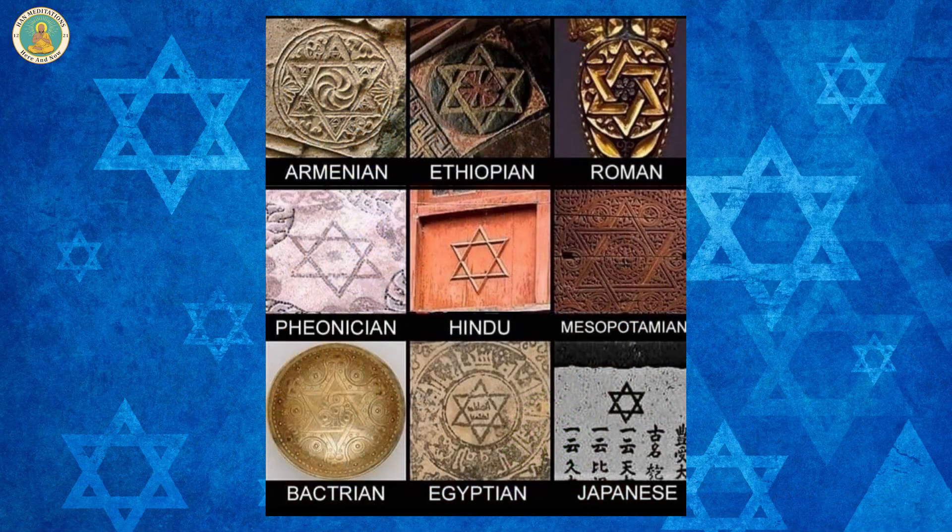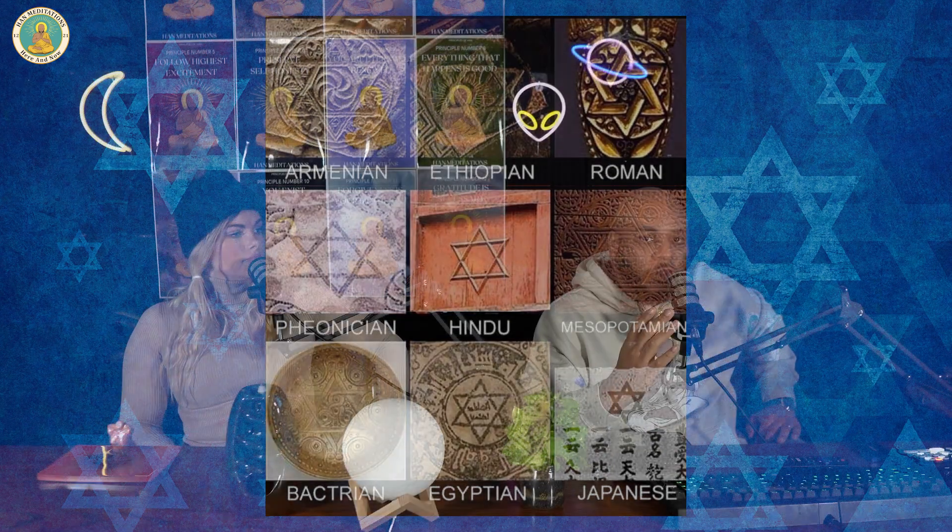The number six is used throughout all different cultures with powerful meanings. In Chinese culture, the number six represents flow, because the word six sounds like the word for flow. In Hindu culture, the number six is a lucky number and is associated with the planet Venus. In Japanese culture, the number six is also associated with cardinal direction.